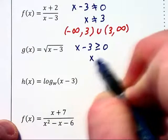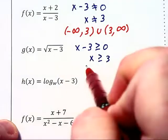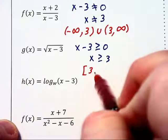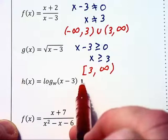Therefore, x must be greater than or equal to 3. And in interval notation, we would write this as the interval from 3 to infinity where we include the 3 at the left endpoint.